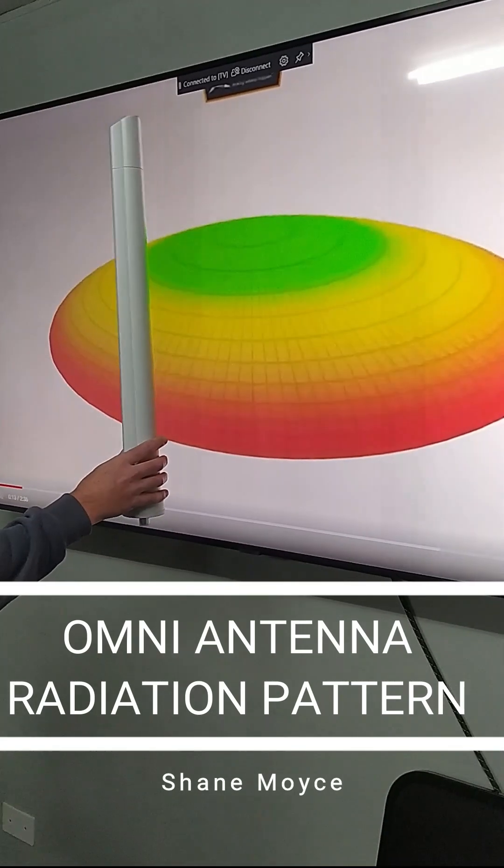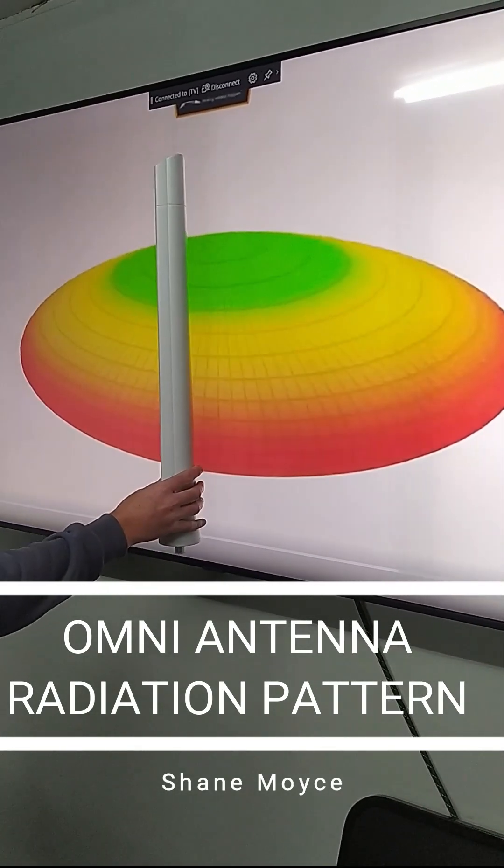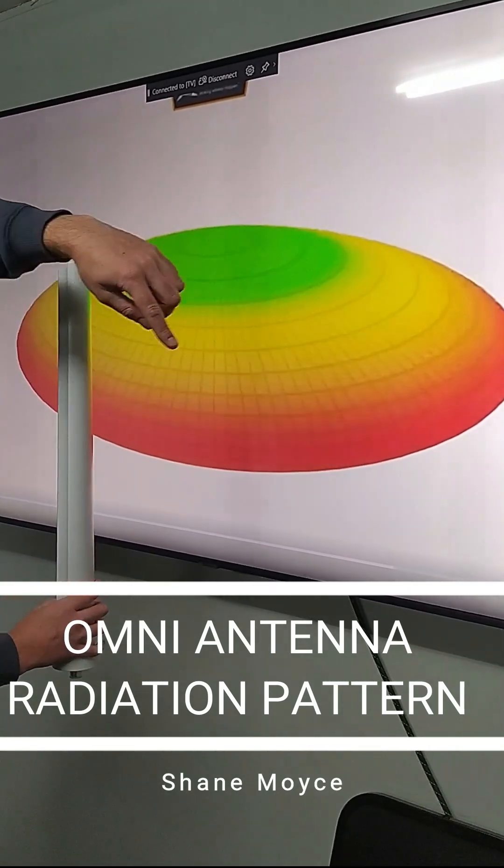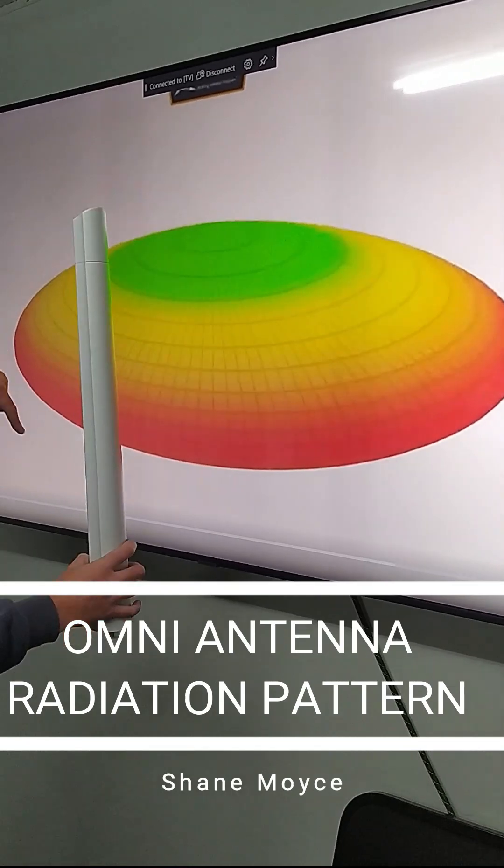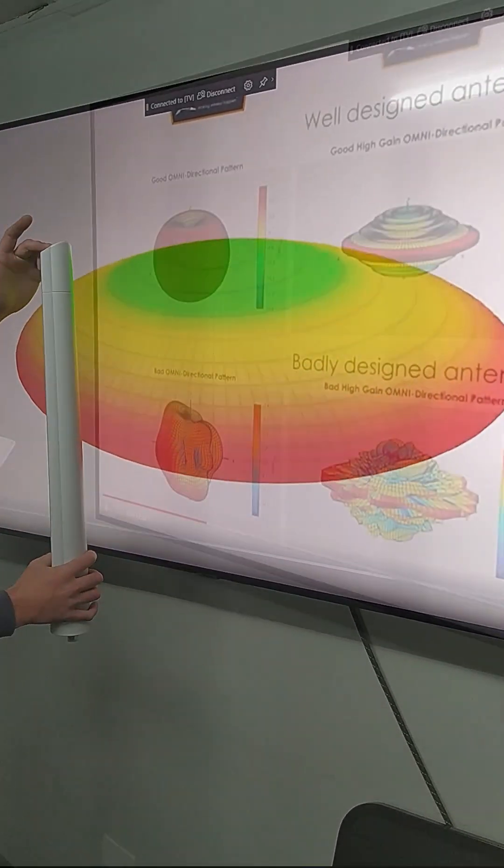For this antenna that I have in my hand, which is an omni-directional antenna, the radiation pattern would look something like this, with your energy going around evenly in 360 degrees in space and getting less and less as you move up in space.